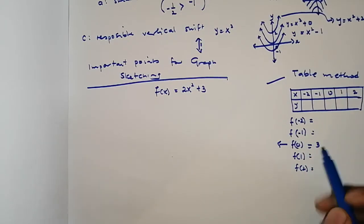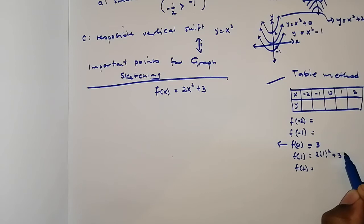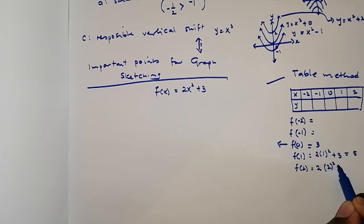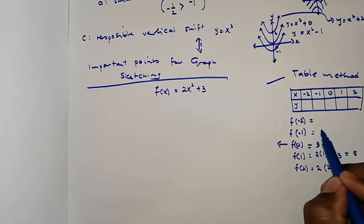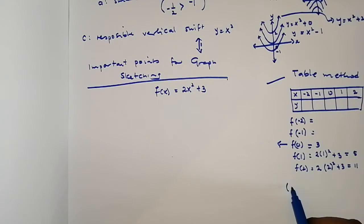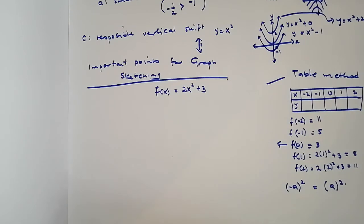For f(1): 2 times 1² + 3 = 2 + 3 = 5. For f(2): 2 times 2² + 3 = 8 + 3 = 11. Also, f(-1) and f(1) will be the same, and f(-2) and f(2) will be the same, because (-a)² equals a². So f(-1) = 5 and f(-2) = 11. You can then plot your graph based on these values.